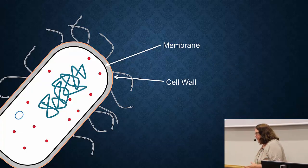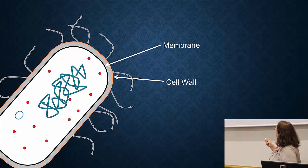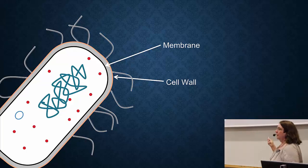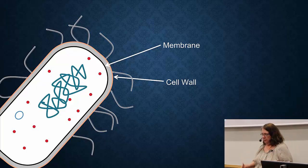Bacteria also have a layer on top of the membrane. The membrane is shown in black here, but then you have this gray layer — we call that the cell wall. The cell wall is outside the cytoplasmic membrane.